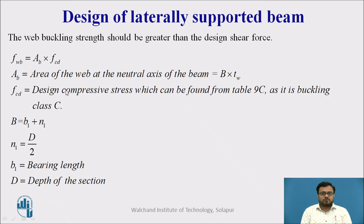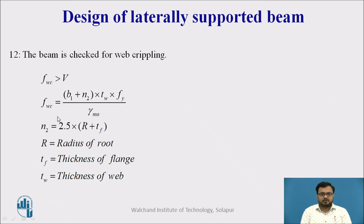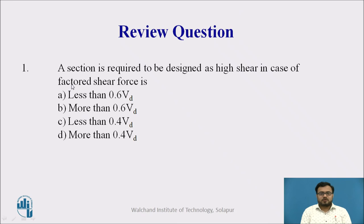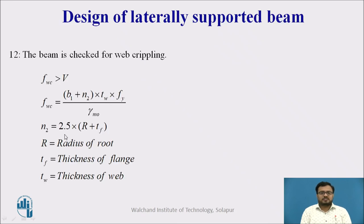After checking web buckling, we take a check for web crippling. FWC should be greater than V, the design shear force. FWC = (B1 + N2) × TW × Fy / γM0, where N2 = 2.5 × R × TF (R is the radius of root, TF is the thickness of flange, and TW is the thickness of web). If all these checks are satisfied, the design is safe.